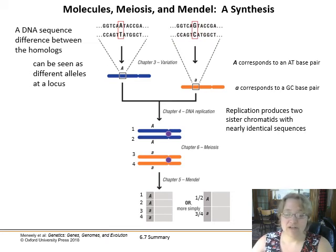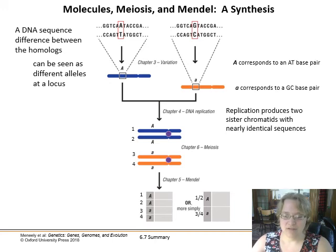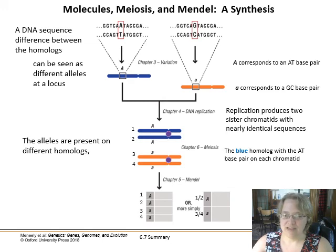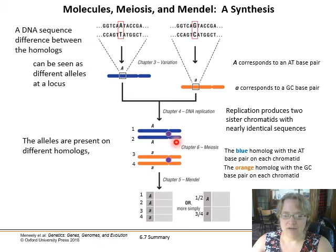The cell undergoes DNA replication and we get two sister chromatids, nearly identical in sequence except for this variation that does change the protein product at that spot. When we go to perform meiosis — whether the cell is a primary oocyte or spermatocyte — we've got these alleles present on the different homologs. Here's our big A and our little a all lined up and ready to start meiosis I. The blue homolog has the AT base pair on each chromatid and the orange homolog has the GC base pair at that particular locus.